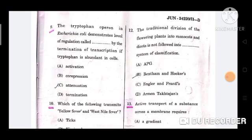Question number 9: The tryptophan operon in Escherichia coli demonstrates level of regulation called -- by the termination of transcription if tryptophan is abundant in cells. The correct answer is option C, attenuation.